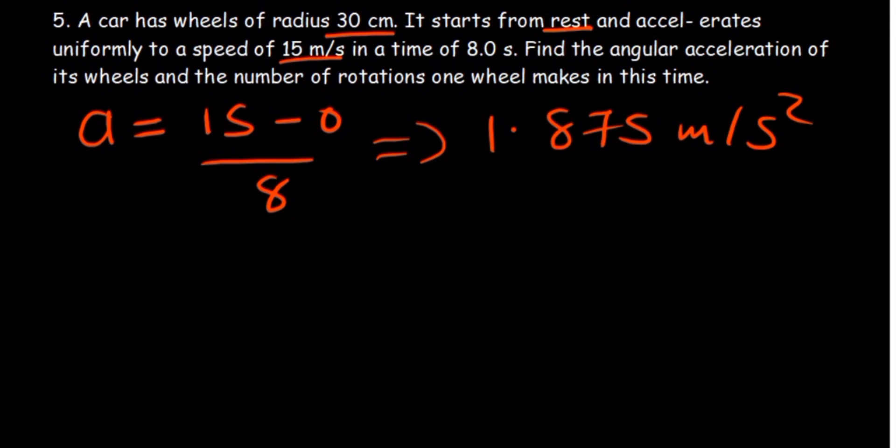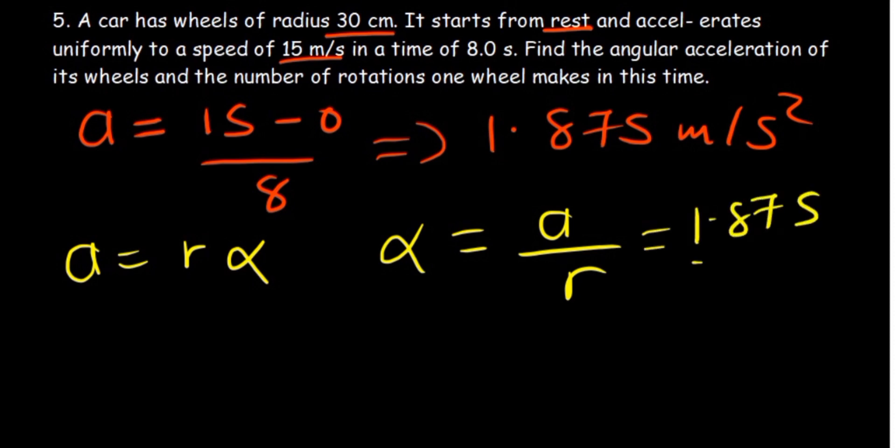We can find the angular acceleration. We know that anything linear is related as a product of radius with its angular counterpart. So if you make the angular counterpart the subject, you have your a being divided by the radius. So we have 1.875.